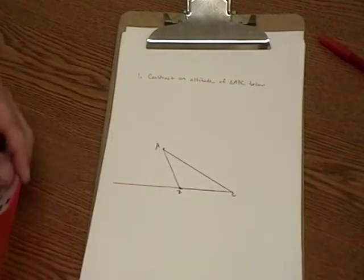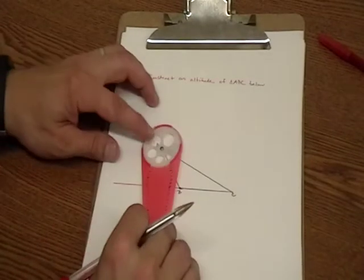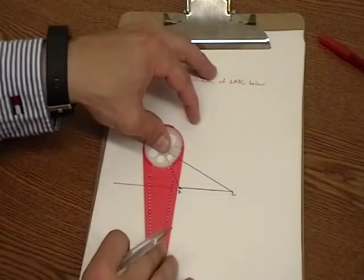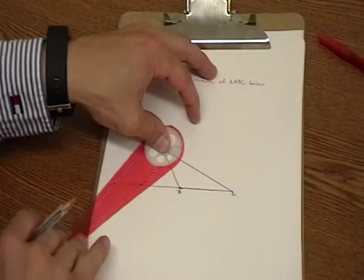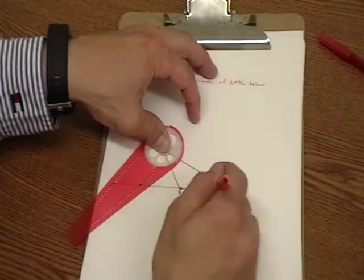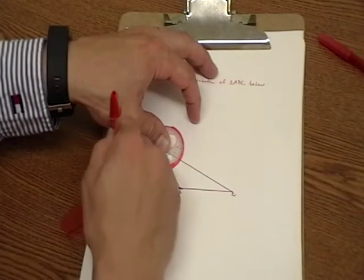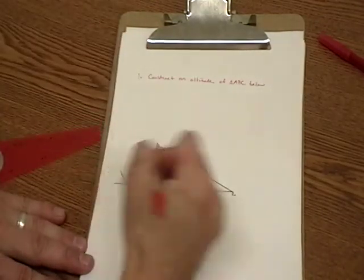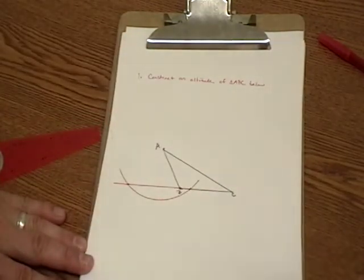I would start with the center of my compass tool on point A, and I'm going to strike an arc through this segment that BC extended here. What I've just done is created two points on this segment that are equidistant from point A.